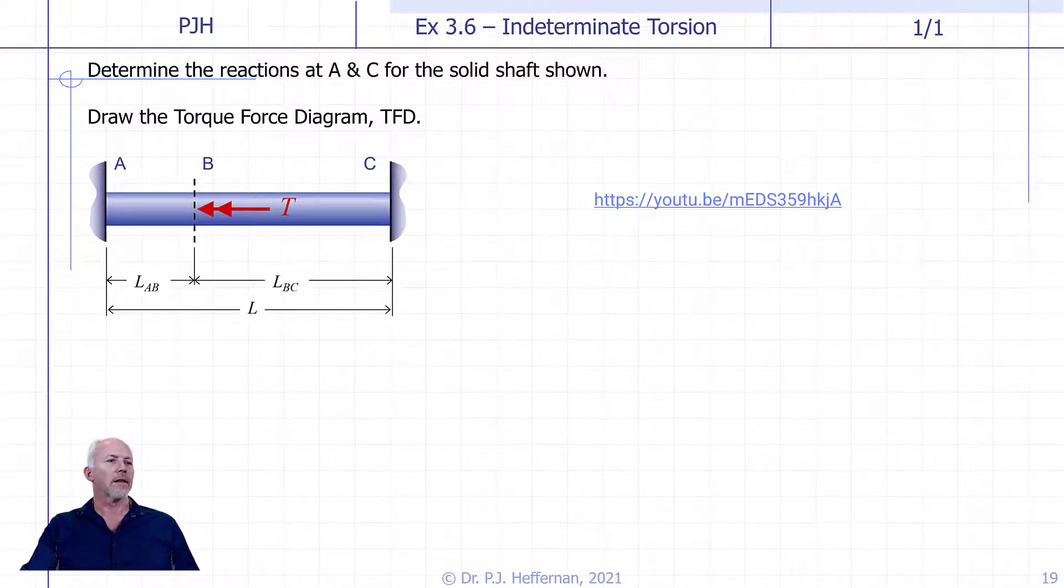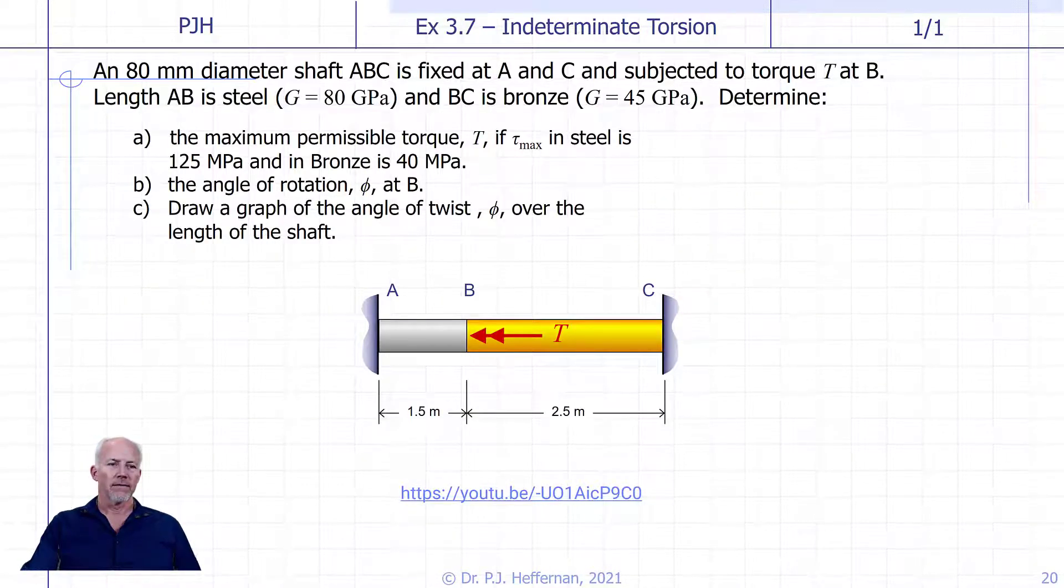When you've done that, to build on that, we have a subsequent example getting a little bit more complicated. I think I actually pulled this sample off an old exam somewhere where we looked at a shaft between A, B and C. We've added the extra wrinkle to say, what if part of the shaft is made with one material and the rest of the shaft is made with a different material?